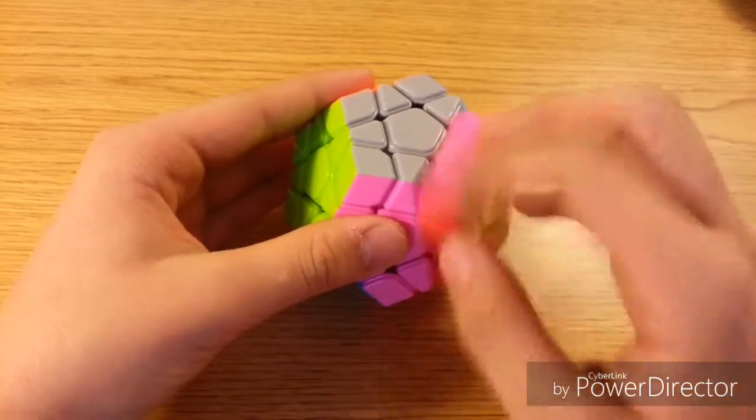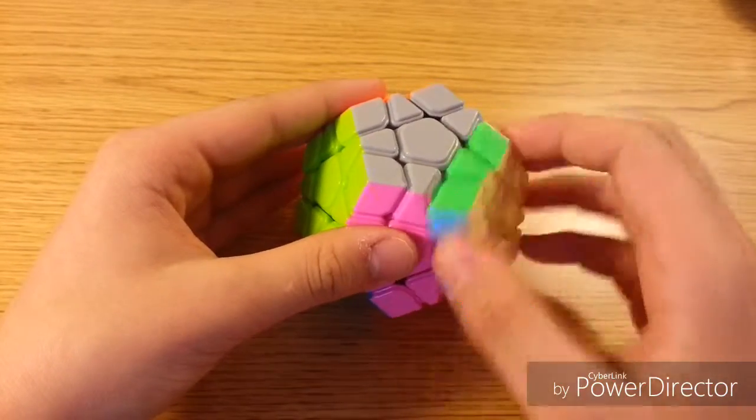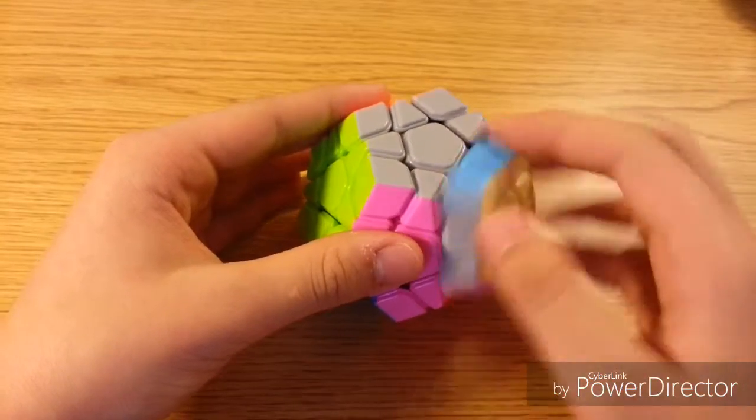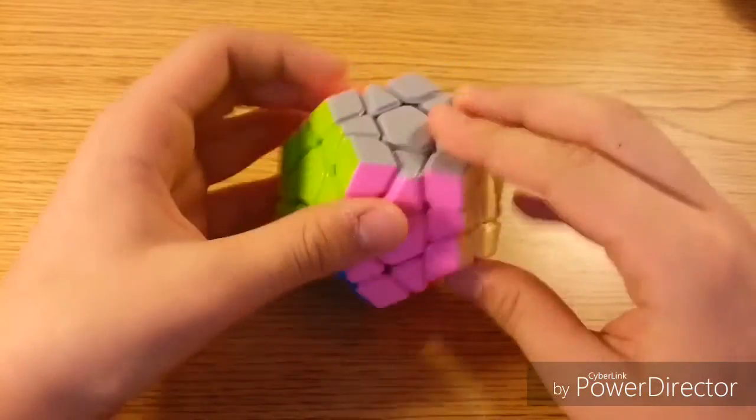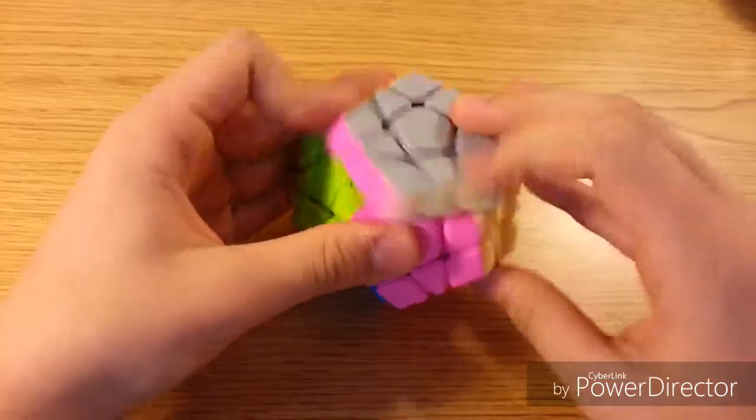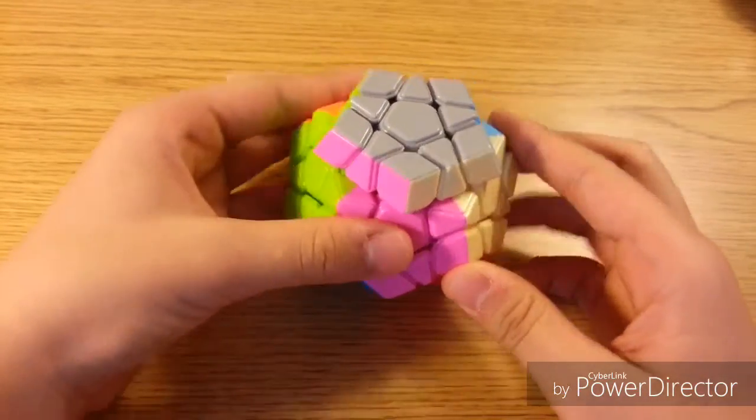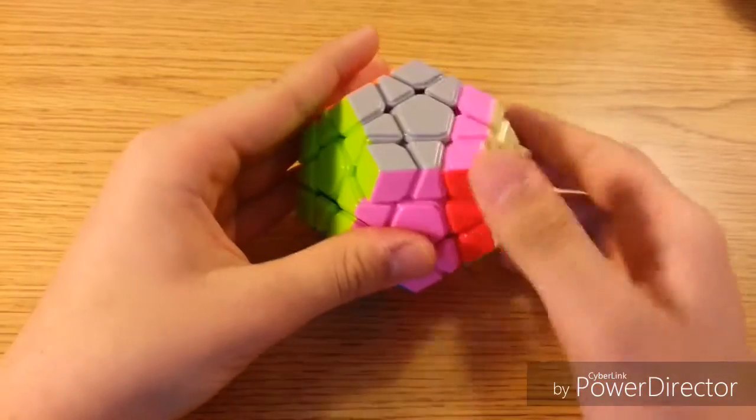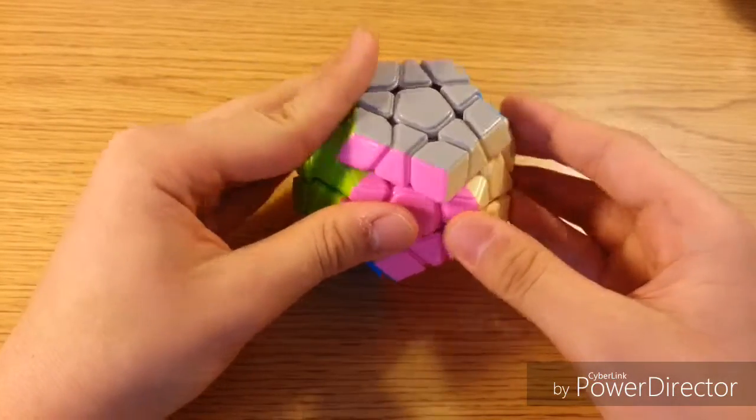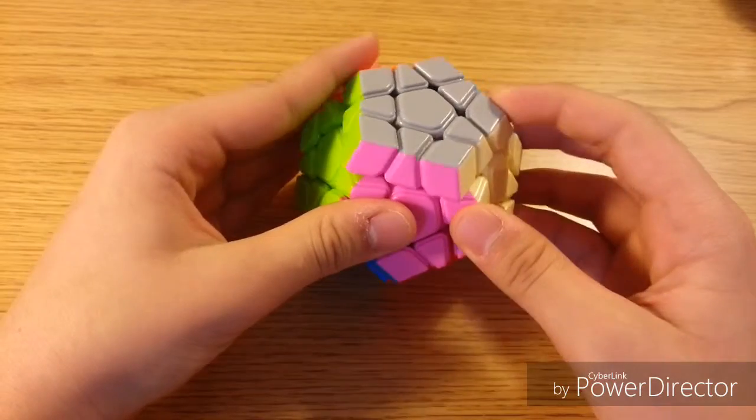It has kind of a buttery smooth feel, not really, but I don't know how to explain it. This puzzle can corner cut about 45 degrees, not every side though. In reverse, around half a piece, barely.